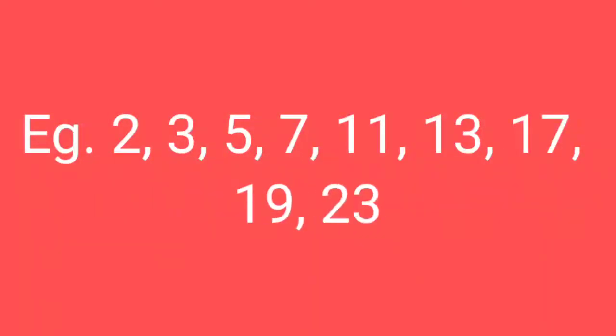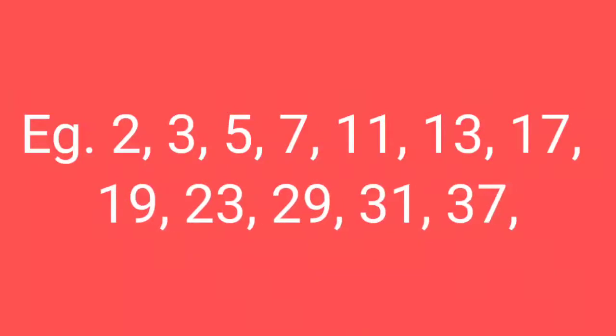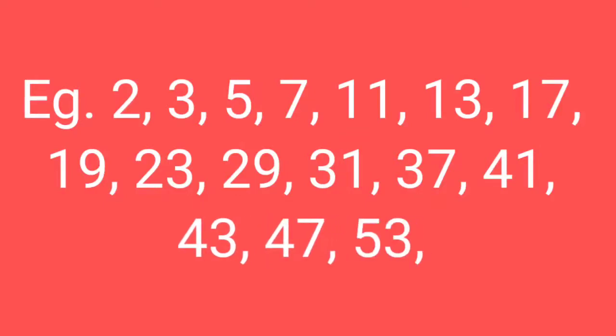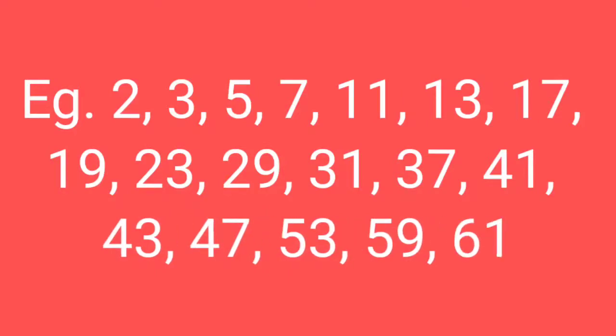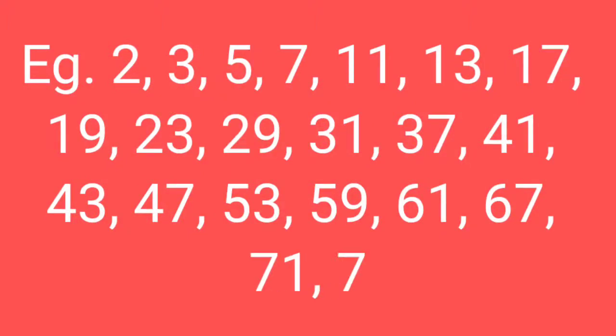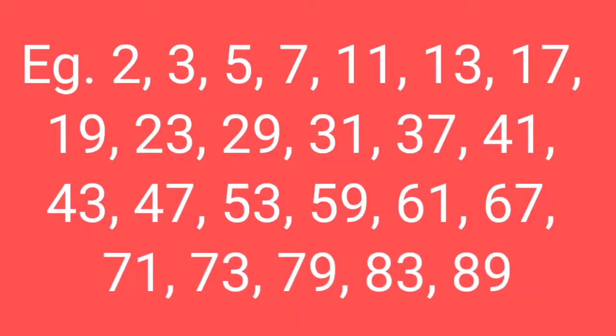For example: 2, 3, 5, 7, 11, 13, 17, 19, 23, 29, 31, 37, 41, 43, 47, 53, 59, 61, 67, 71, 73, 79, 83, 89, and 97. We can easily see that there are 25 prime numbers from 1 to 100.